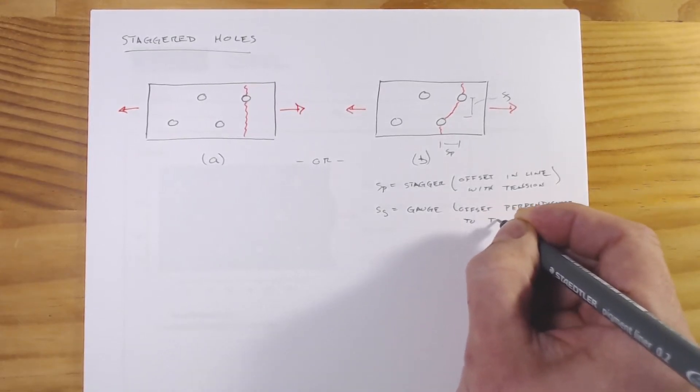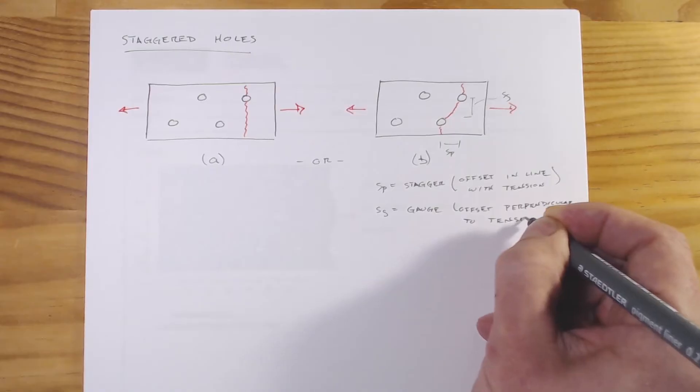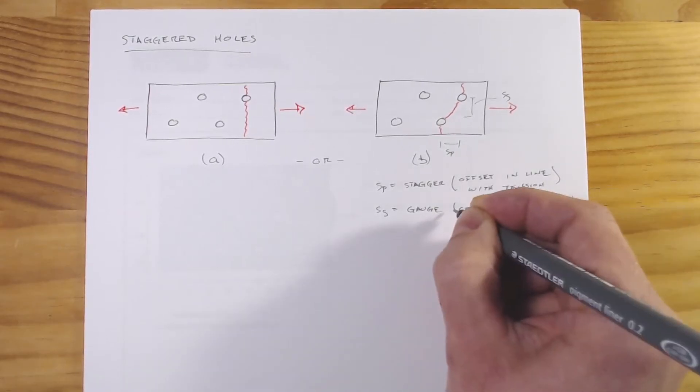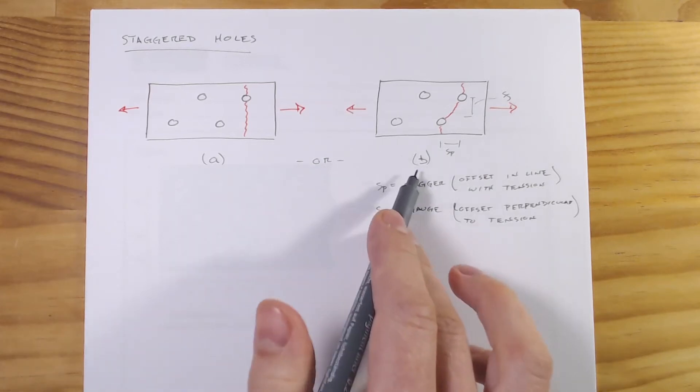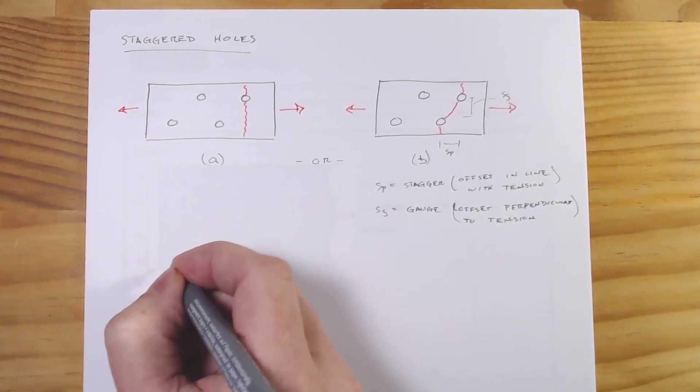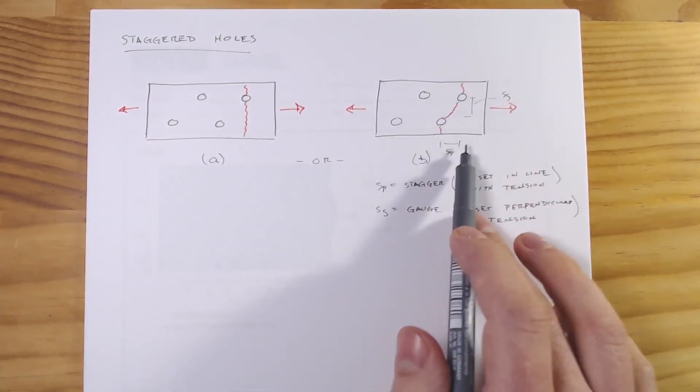So that's just our terminology there. Now for case A we know how to deal with this, this is very similar to what we've already done where we just have a net area. But for case B, this sort of true axial stress no longer holds.